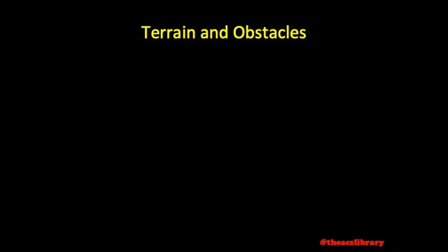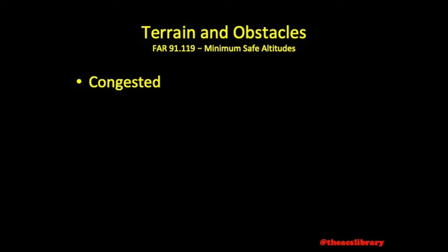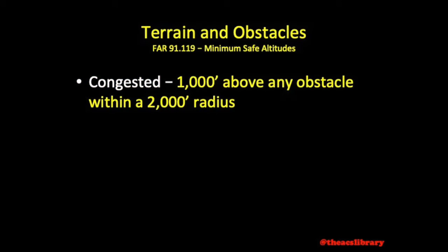Beginning with terrain and obstacles, the minimum safe altitudes are defined in FAR 91-119. According to the regulation, unless taking off or landing, no person may operate over congested areas of cities, towns, settlements, or any open-air assembly of persons at an altitude below 1,000 feet above the highest obstacle within a horizontal radius of 2,000 feet of the aircraft.